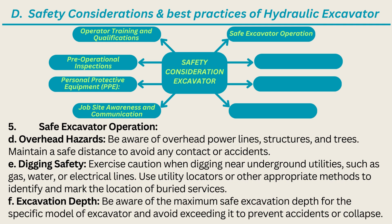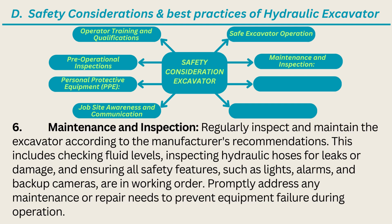d) Overhead hazards — be aware of overhead power lines, structures, and trees; maintain a safe distance to avoid any contact or accidents. e) Digging safety — exercise caution when digging near underground utilities such as gas, water, or electrical lines; use utility locators or other appropriate methods to identify and mark the location of buried services. f) Excavation depth — be aware of the maximum safe excavation depth for the specific model of excavator and avoid exceeding it to prevent accidents or collapse.